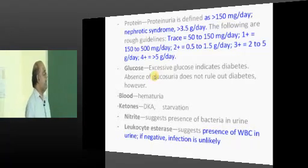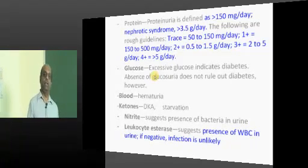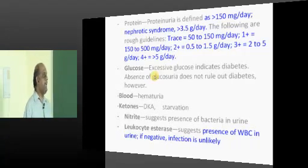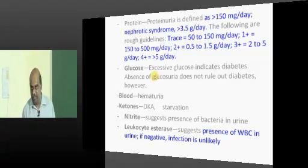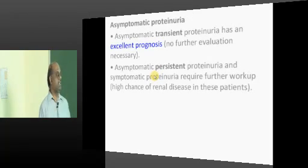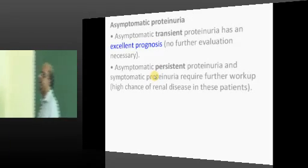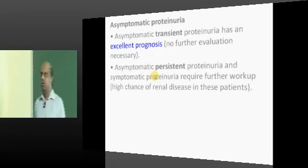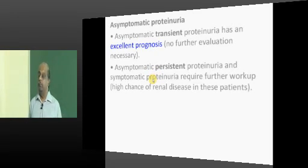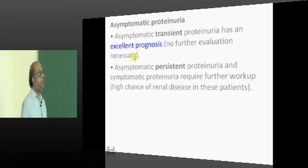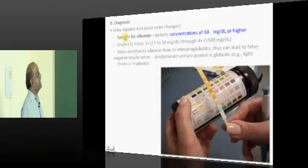Look for glucose, blood, ketones, nitrates and leukocyte esterase levels. If you are suspecting UTI or pyelonephritis, the leukocyte esterase levels will be typically elevated in the urine sample. Look for casts, bacteria, and crystals. That is all the story of how you examine a urine sample. Some people are totally asymptomatic but on urine examination found to have proteinuria. Asymptomatic transient proteinuria does not require further evaluation and carries an excellent prognosis.